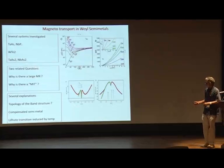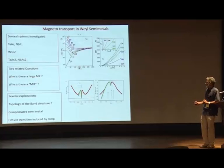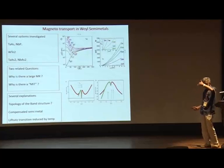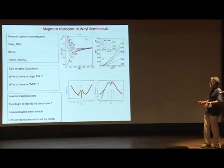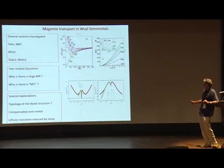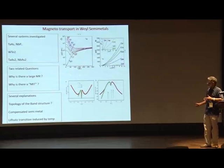Key open questions are: why is there such a large magneto resistance, and is there a metal-insulator transition? Arguments have been made about whether this is related to band topology — for instance, the low-temperature saturation has been attributed to topologically protected states — while others argue this is simply a compensated semi-metal. There are also questions about a temperature-induced or topological phase transition.